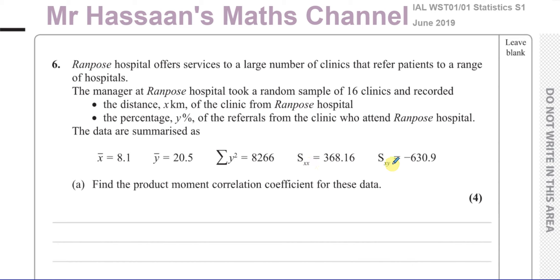Sxx and Sxy are basically a measure of how spread out the data is. Sxx measures how spread out the x values are from the mean, and Sxy measures how spread out the product of the distances and percentage of referrals are from the mean of these two — it gives an idea of variance. Sxx is the variance of the x values amongst themselves, and Sxy is the variance of the x and y values with each other.